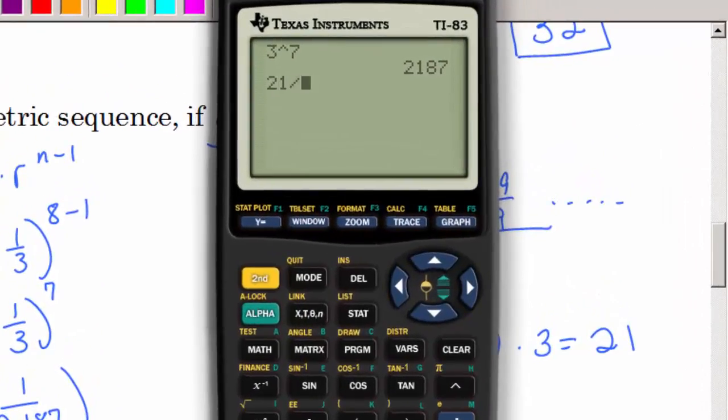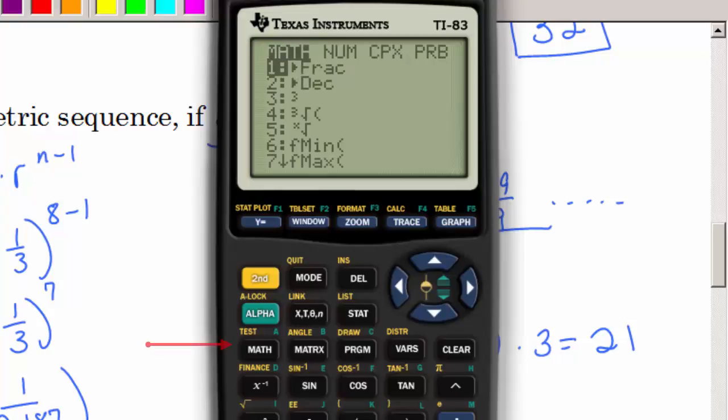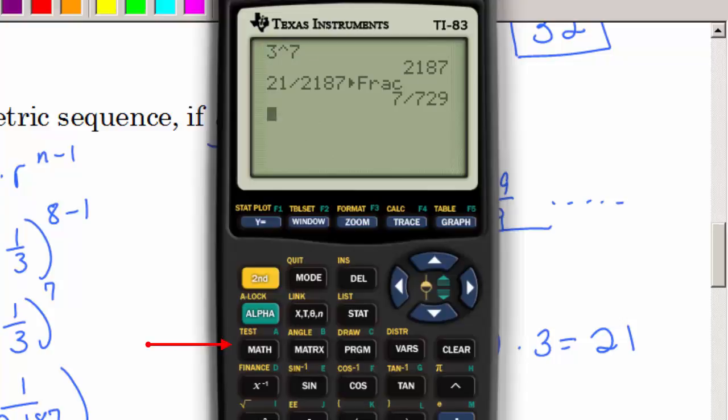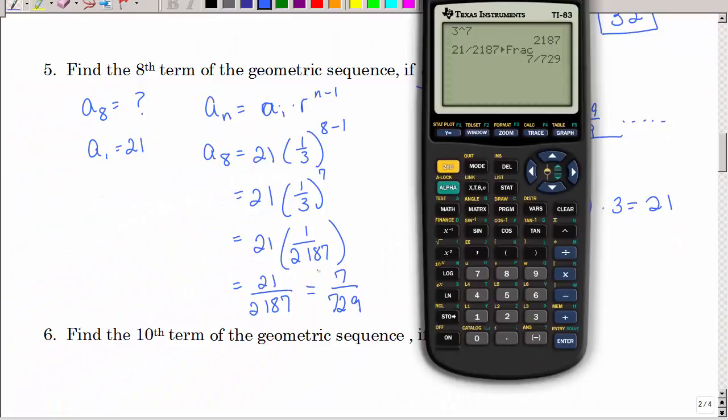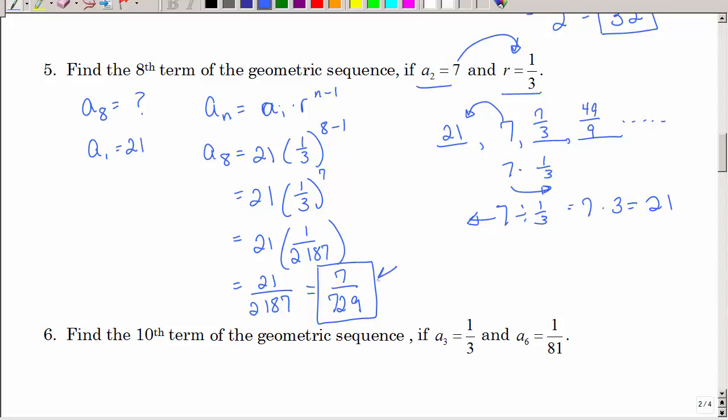So, I'm going to punch that in the calculator. 21 divided by 2,187. If I just said enter right now, it's going to give me a fraction. I mean, it's going to give me a decimal, but I'd like a fraction. So, I'm going to go to the math button. Option 1 is fraction. And then, hit enter. And my calculator is going to reduce this for me. So, that's the exact answer where if you did a decimal, you'd have to probably round. So, again, use that fraction button. Very helpful. And this would be the eighth term of that sequence.